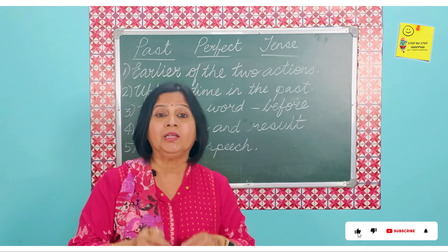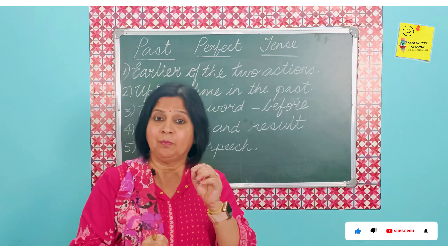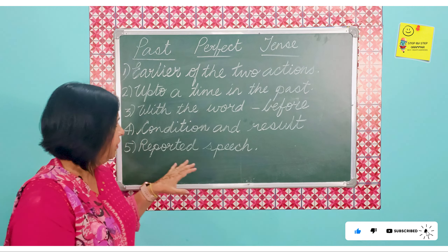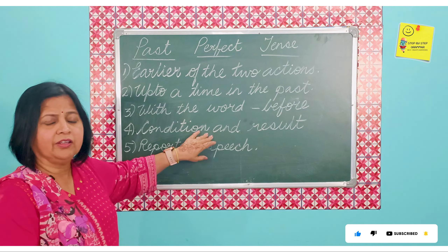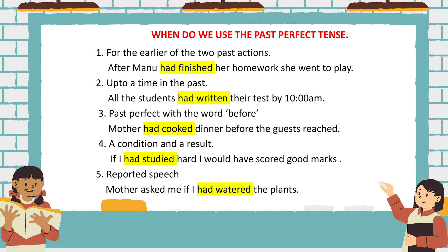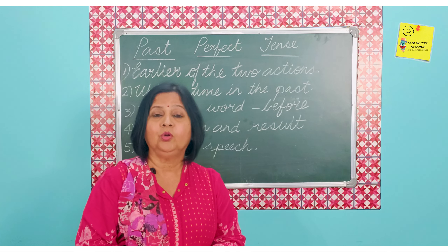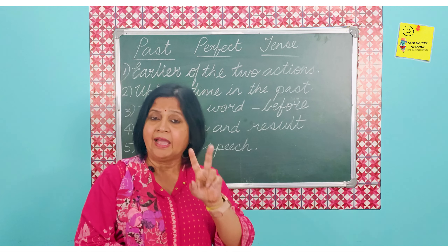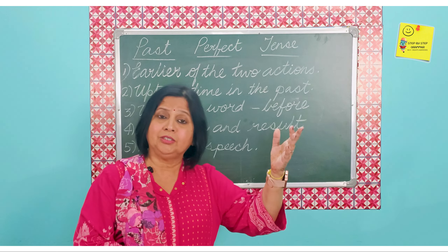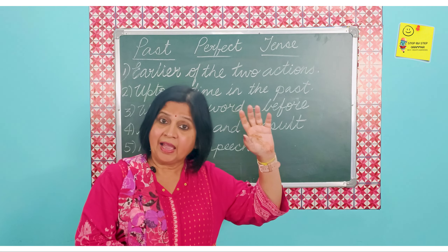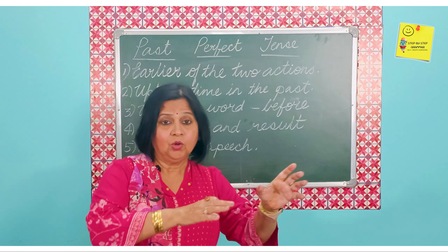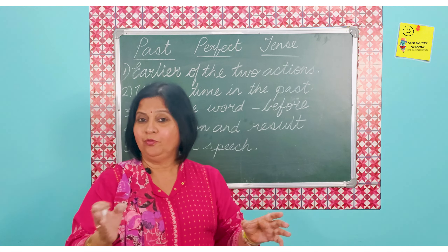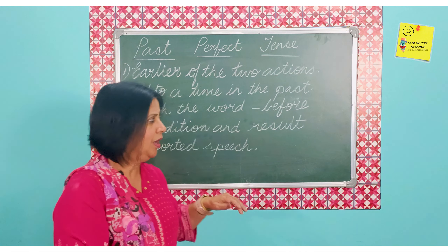'Had cooked' — the highlighted ones are in the past perfect. Then we have a condition and a result: 'if I had done this, this would have happened.' For example, 'if I had studied hard, I would have scored good marks.' Again, two actions in the past — one is a condition, and the result follows: if I had studied, what would have been the result? I would have scored good marks.